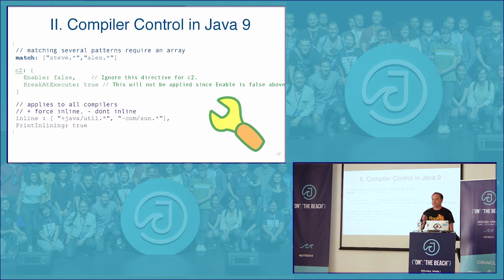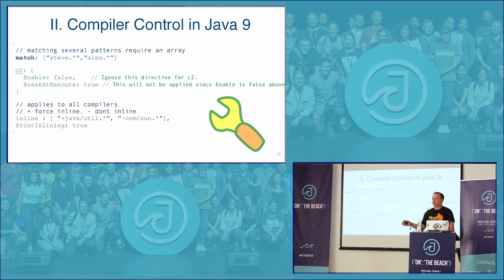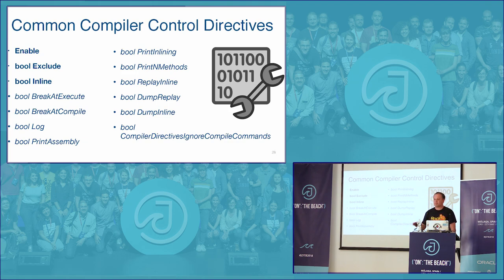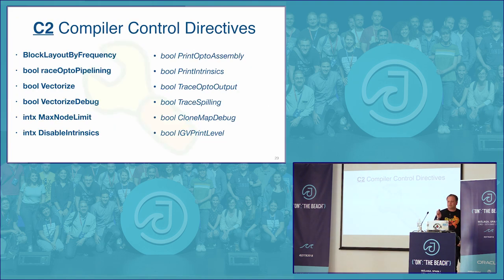In Java 9, there is a rework of this API — Compiler Directives — where the syntax becomes much richer and you can do all sorts of filtering. But in essence you specify the same kind of actions: never compile this method, always compile it, always inline it, never inline it. Beyond that, you can specify flags to control VM diagnostic output, like print assembly. If you do print assembly for the entire program, thousands of compiled methods will dump assembly to your console; with directives you can control it to dump only for a specific method.